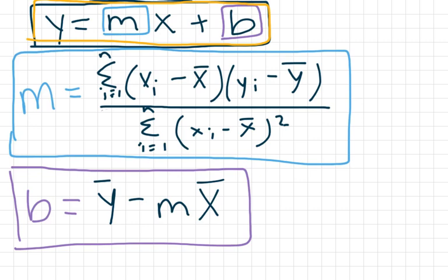In order to solve for m, the slope, we have this formula. We're going to take all of our x values — x_i is any x value in our list — and subtract the mean of the x values x̄. We do the same thing for the y values: take each y value, subtract the mean ȳ, multiply those together, and find the sum of all of that. Then divide by the sum of each x value minus the mean of x, squared and summed.